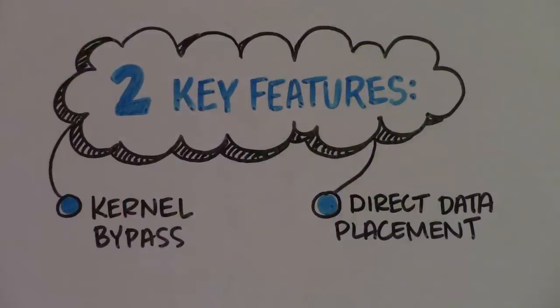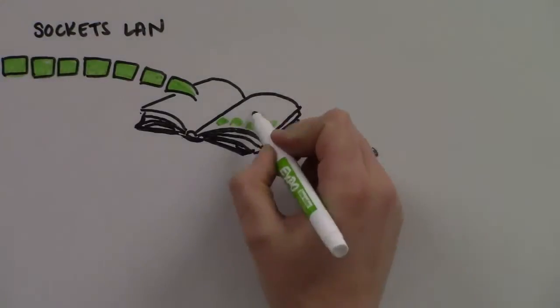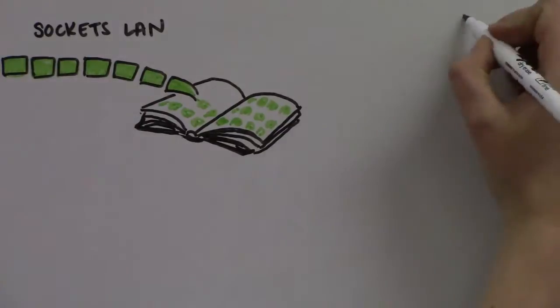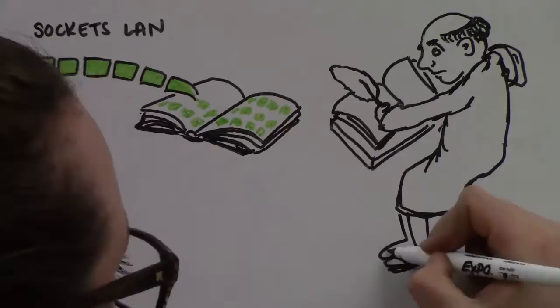The second key reason for iWARP's networking efficiency is a feature called direct data placement. With traditional sockets Ethernet, the host processor doesn't know where the application resides that wants to consume an incoming packet, so it creates a queue in kernel space.